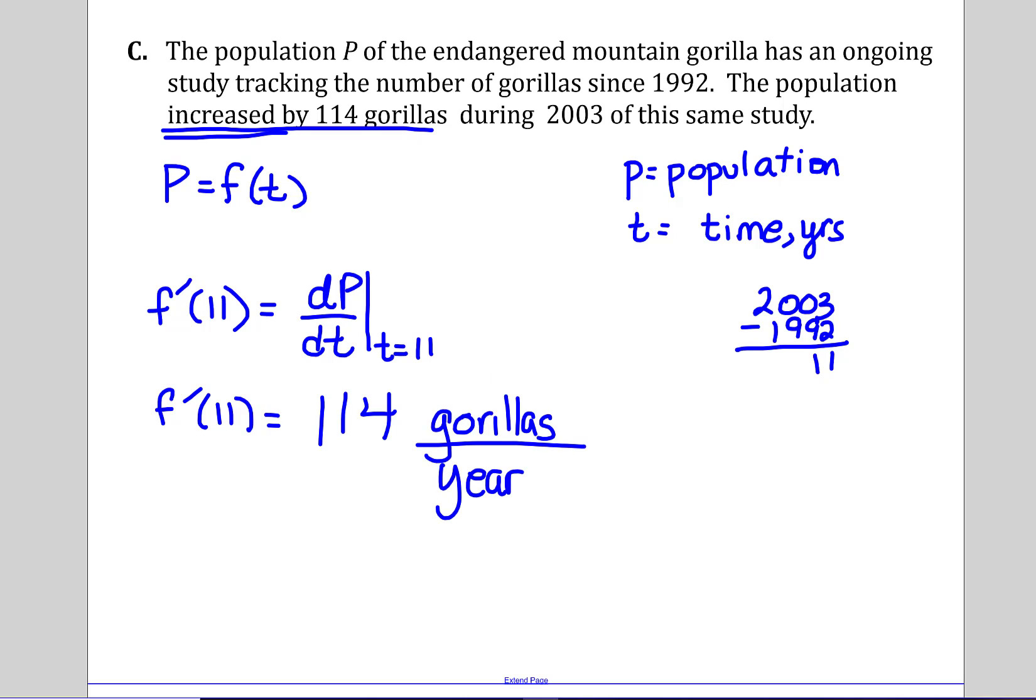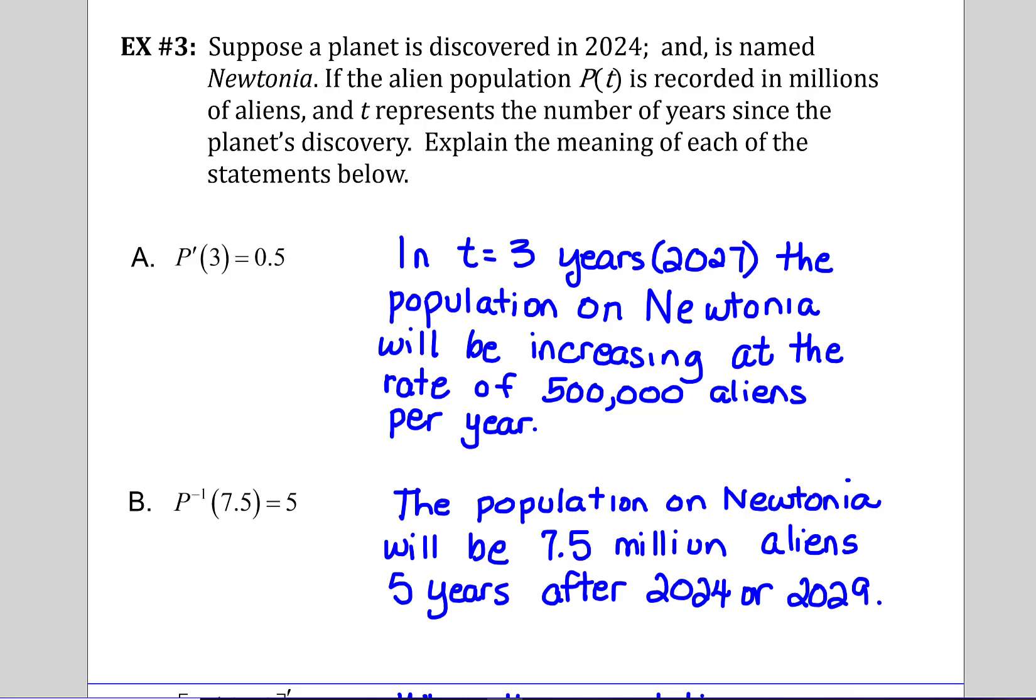So moving on to example three. Suppose a planet is discovered in 2024 and is named Newtonia. If the alien population P(t) is recorded in millions of aliens, and t represents the number of years since the planet's discovery, explain the meaning of each of the statements below.